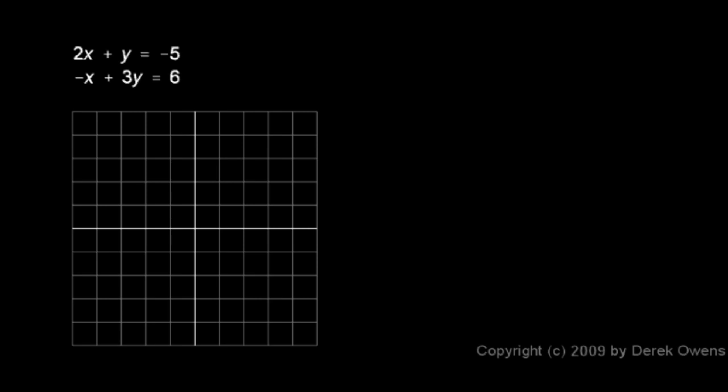2x plus y equals negative 5. That's my first equation. I'm going to solve that for y, so I just subtract 2x from each side, and I get y equals negative 2x minus 5.